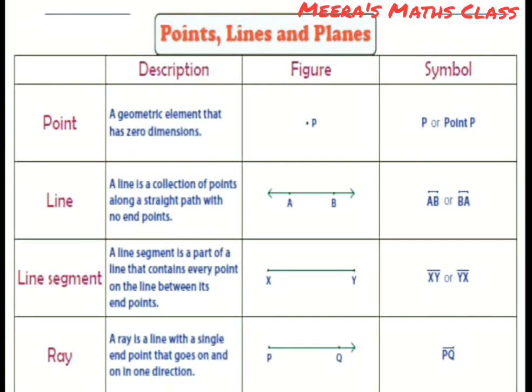Line segment, a line segment is a part of a line that contains every point on the line between its end points. So XY, the figure you see, XY is there and it stopped there. Both the X and Y are the end points. So while we write the symbol XY, on it we give a bar without any arrow, we just put a bar, or we can write YX and put a bar.